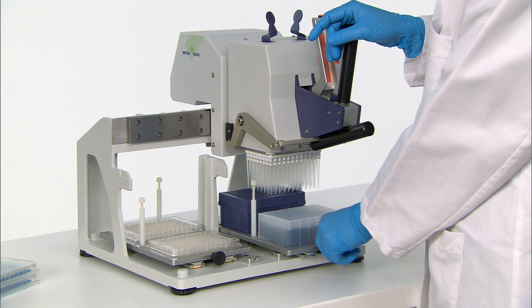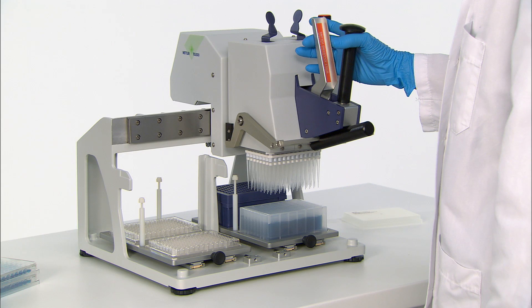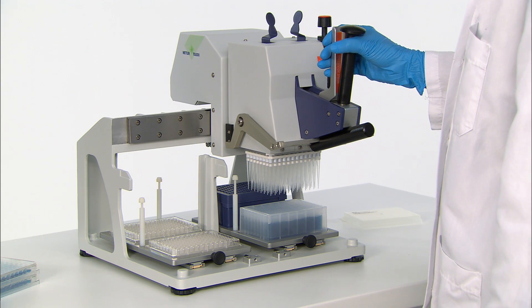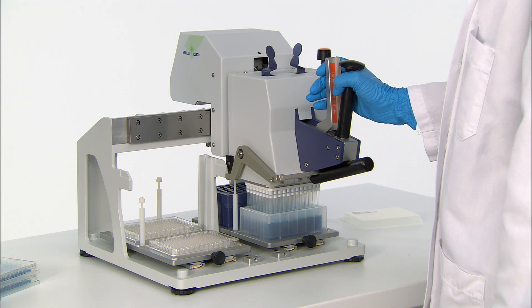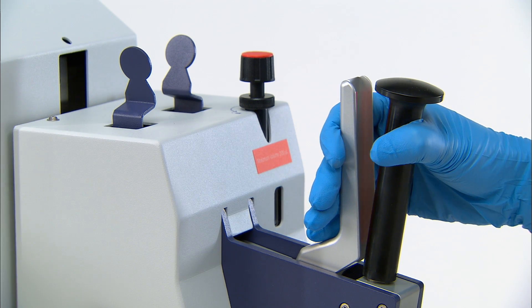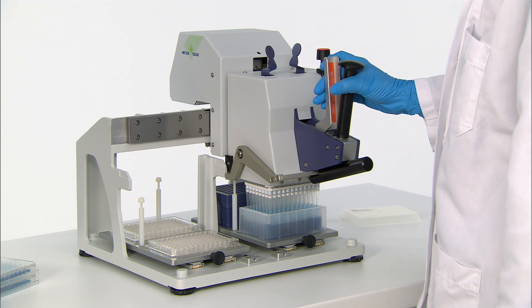Once the tips are loaded, slide the right platform back so that the tips are over the liquid sample. Squeeze the pipetting lever and lower the tips into the liquid. Slowly release and squeeze the handle twice in order to pre-rinse the inside of the tips for best accuracy and reproducibility.